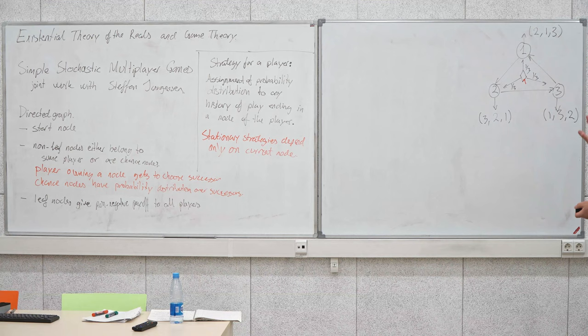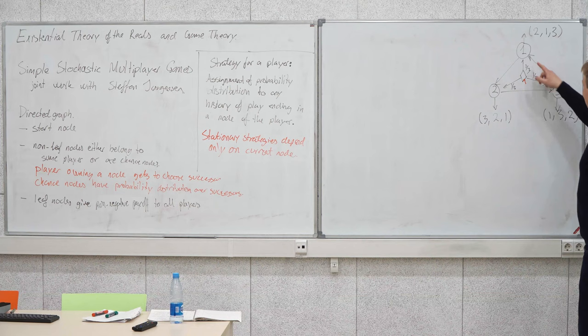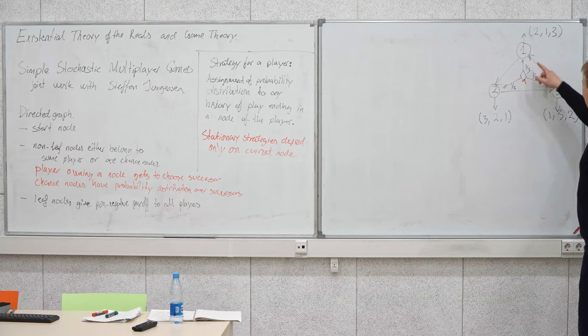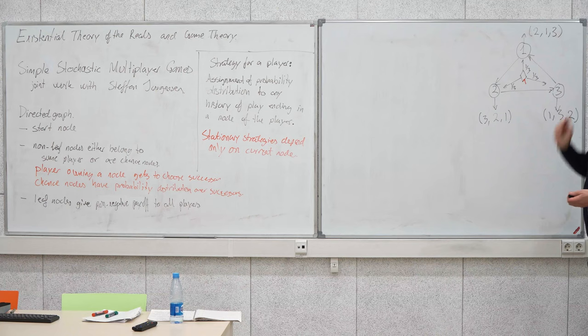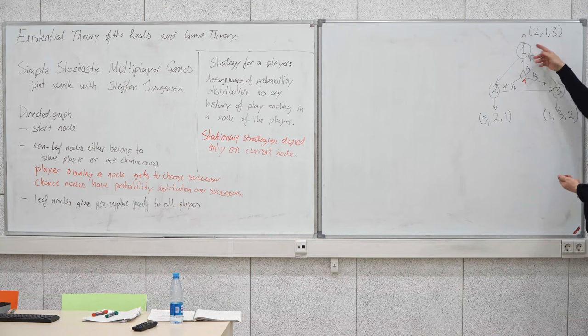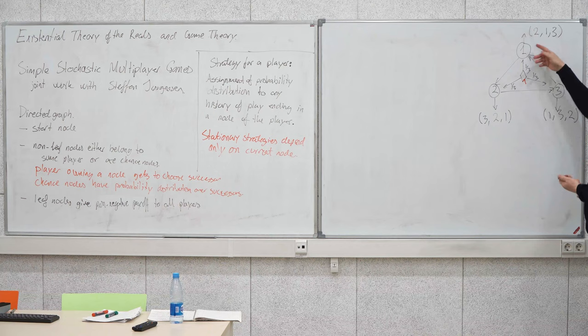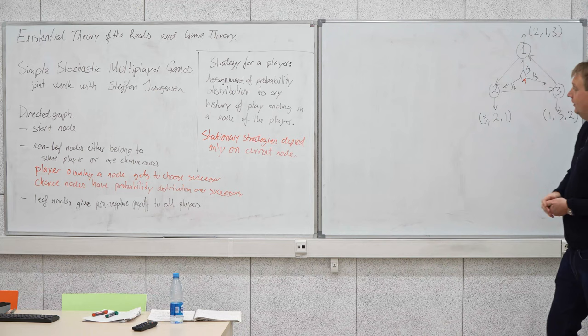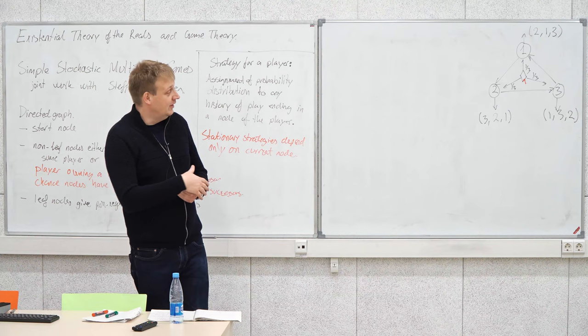In this example, a stationary strategy would be that each player gets to exit with a certain probability. If no player actually exits the game, we just continue around in a cycle and all players receive payoff zero — which is bad. So it would be better for a player to exit with some probability. It's quite easy to see that a pure stationary strategy profile cannot be a Nash equilibrium in even this simple game.